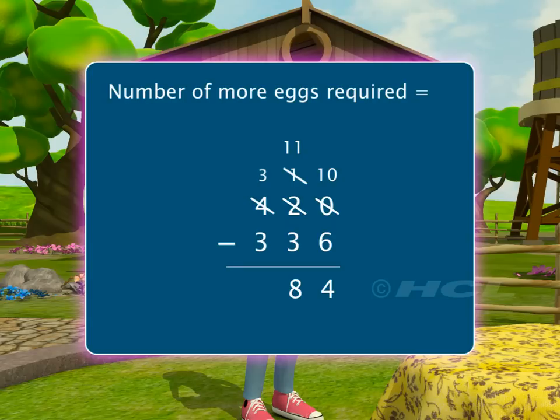Subtracting 3 from 3 in the hundreds column, we get 0 as the answer. So, 84 more eggs are required by Sam to make 420 eggs.